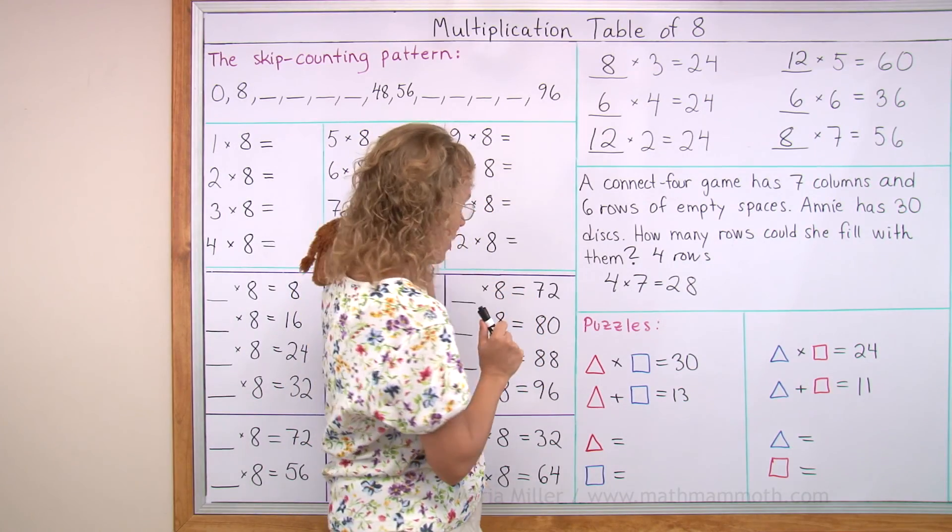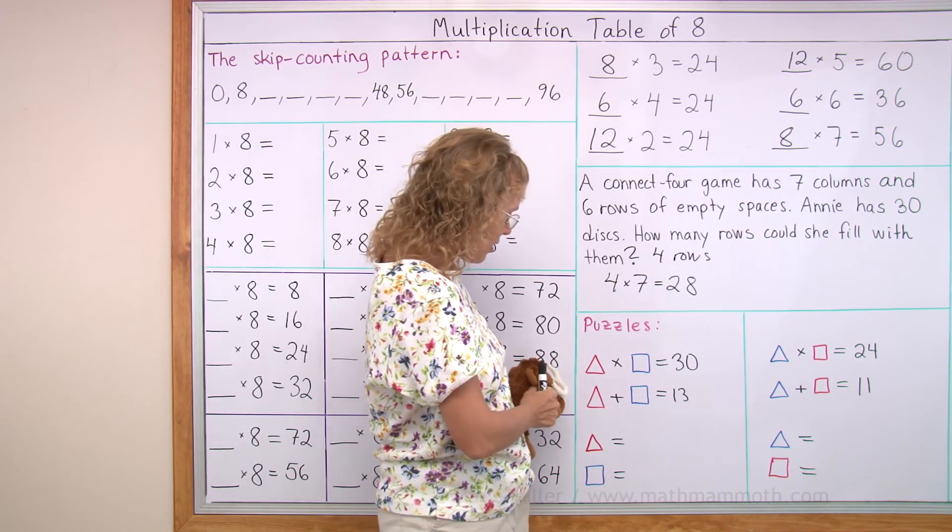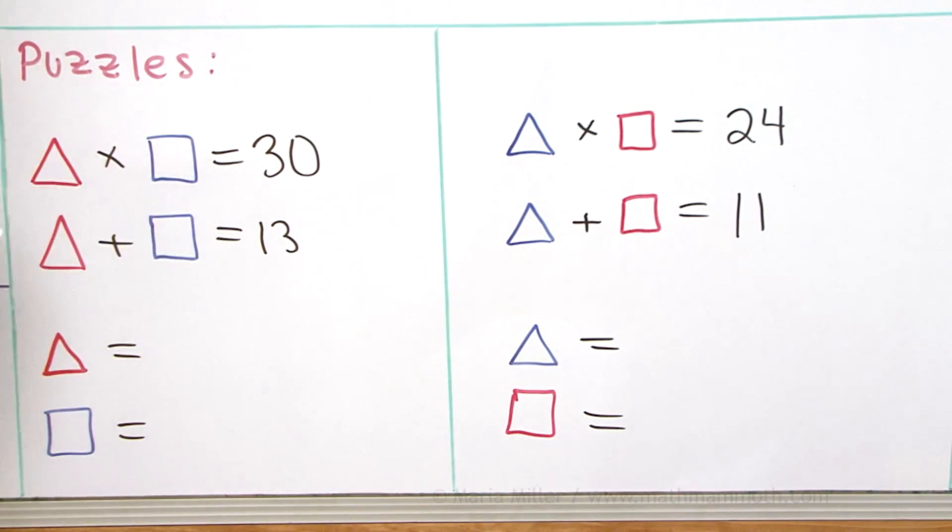Lastly, look, Matthew. Ready to do puzzles. There's 2 unknowns in this puzzle, 2 unknown numbers. A triangle is 1 number, some number, and this square is another number. So what 2 numbers? You multiply them, you get 30. And you add them, you get 13.